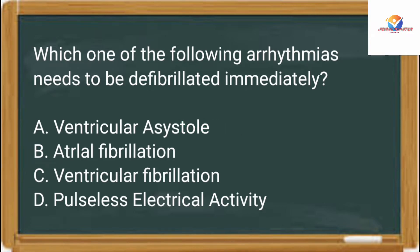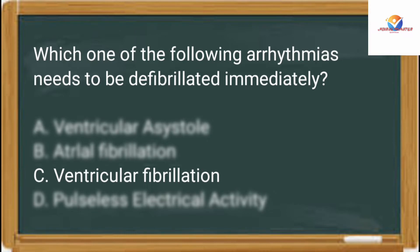Which one of the following arrhythmias needs to be defibrillated immediately? Option A: ventricular asystole. Option B: atrial fibrillation. Option C: ventricular fibrillation. Option D: pulseless electrical activity. The correct answer is option C, ventricular fibrillation.